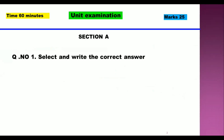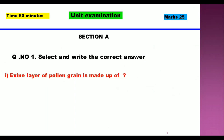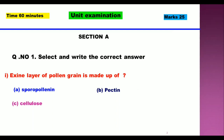Section A: Select and write the correct answers from the given MCQs. First MCQ: The exine layer of pollen grain is made up of — Option A: Sporopollenin, Option B: Pectin, Option C: Cellulose, Option D: Chitin.